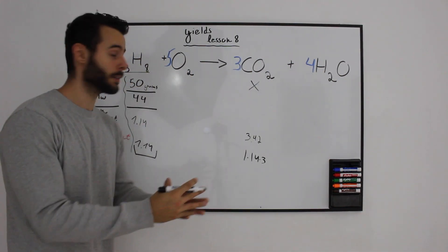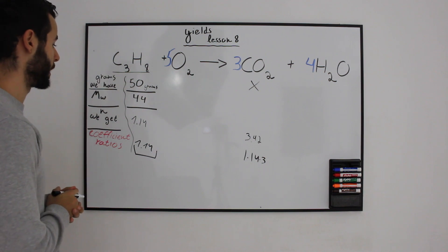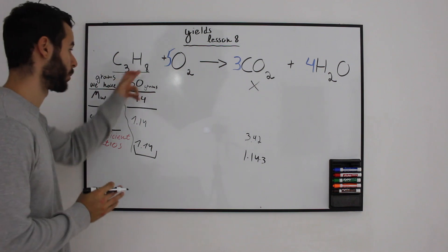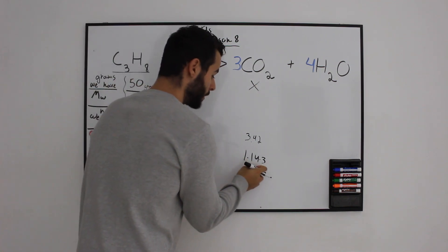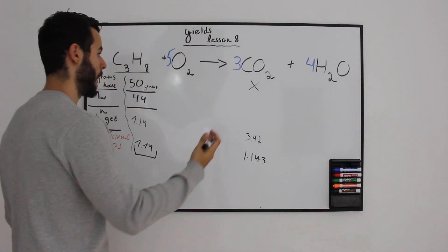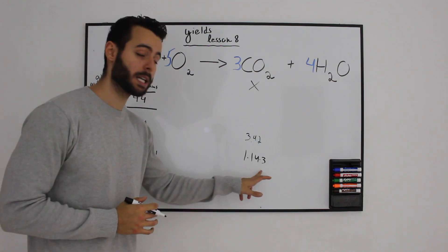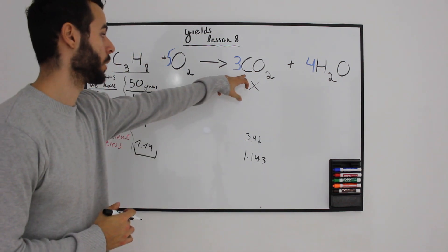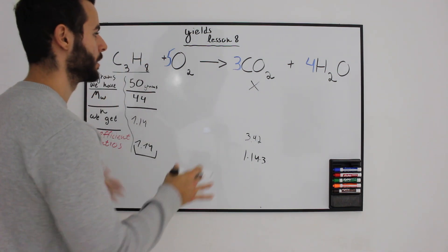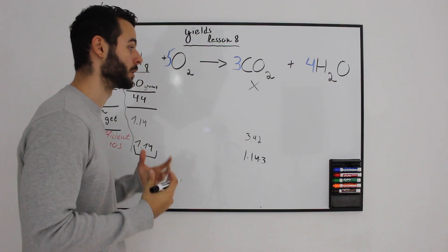Theoretically, from 50 grams of propane, which is 1.14 moles of propane, we should get 1.14 times 3 moles of carbon dioxide. Why multiply by 3? Because the coefficient ratios are 3 to 1. This is why it's so easy using this table to get the coefficient and see the numbers we have.